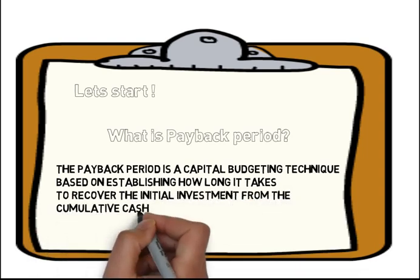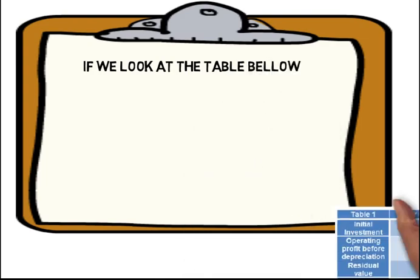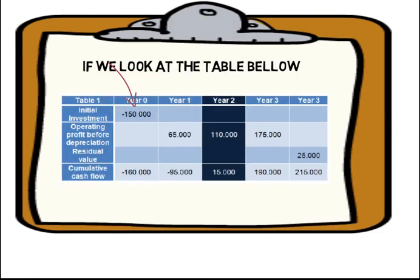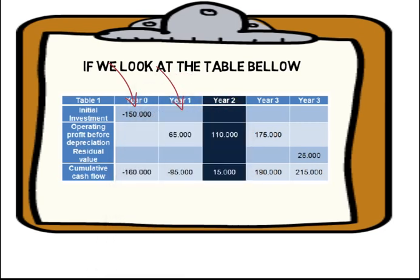So if we look at the table below, we can see that our initial investment in year 0 was £150,000. In year 1 we had operating profit before depreciation of £65,000, in year 2 £110,000 and in year 3 £175,000. At the end of year 3 we had £25,000 of residual value.